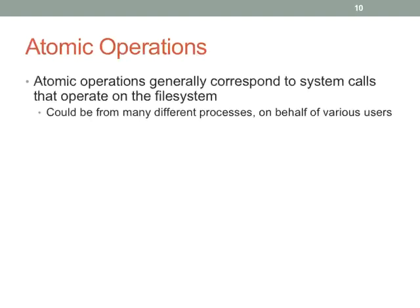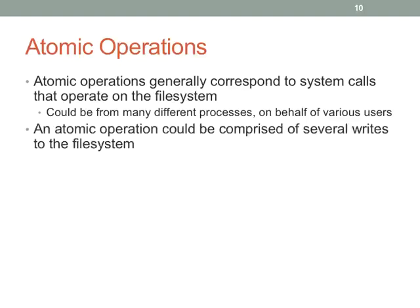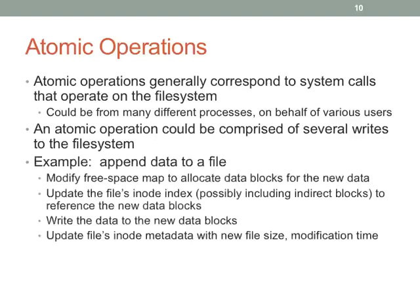That's the overview of journaling. Atomic operations correspond to system calls, and if you run strace on something like Postgres or a web browser, you'll see an insane number of system calls. If you made every atomic operation a transaction, you'd have a huge number of transactions. So Linux will group a bunch of atomic operations together into a single transaction.